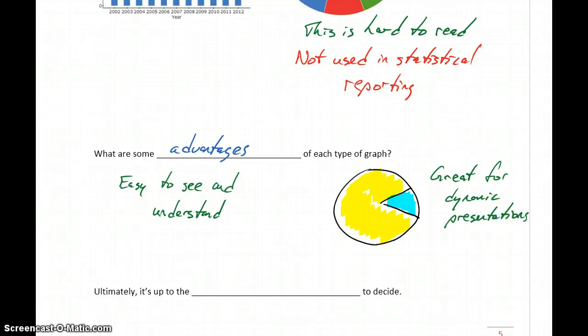So pie charts can be great for very dynamic presentations. They're eye-catching, they're colorful, that's why they get used in newspapers and on television a lot. They're great for having very dynamic and visually interesting presentations. They're also good when you're making comparisons between two categories with drastically different numbers of counts, because you can see how that one category takes up almost that entire circle.